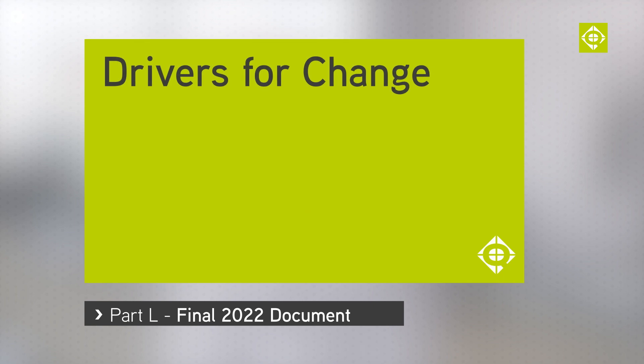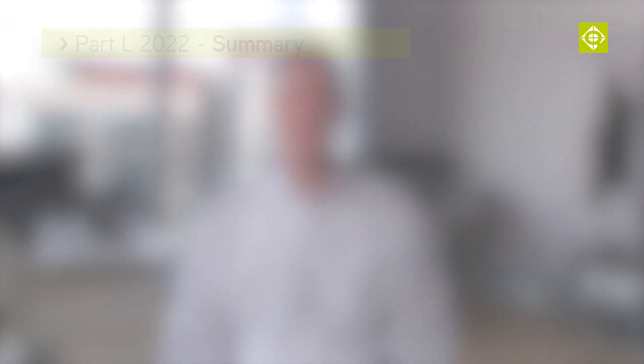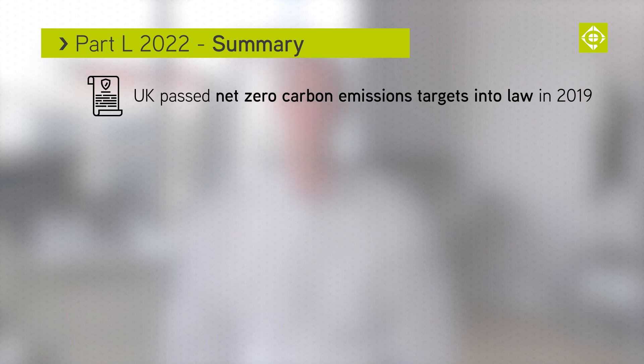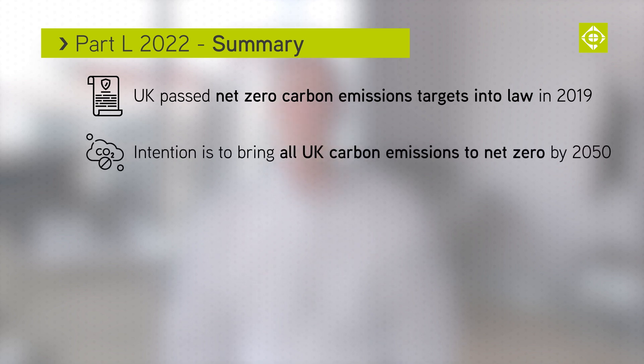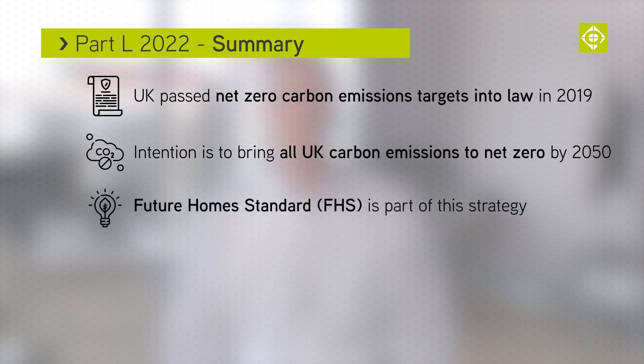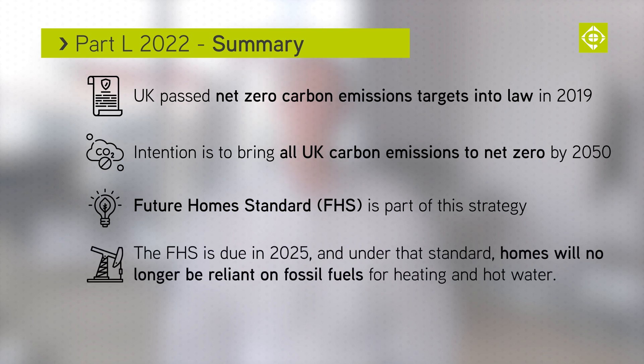Let's remind ourselves of the drivers for change for the new Part L. In 2019 the United Kingdom became the first major economy to pass net zero carbon emission targets into law. The aim is to bring all UK emissions to net zero carbon by 2050. The Future Homes Standard, or FHS, is part of the Government's response to hit that target, with the FHS due to be in place by 2025. That standard will mean homes will no longer be reliant on fossil fuels for heating and hot water, and should produce significantly less CO2 emissions.